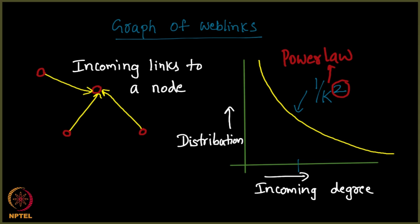So, the exponent here is 2, it can be anything for what we know. But in this case, in the case of the web links, it turns out to be k square.